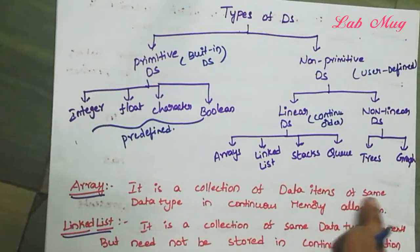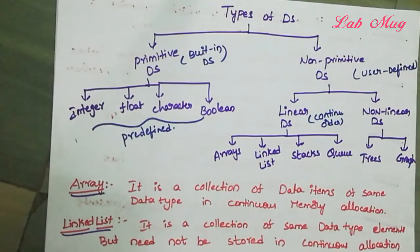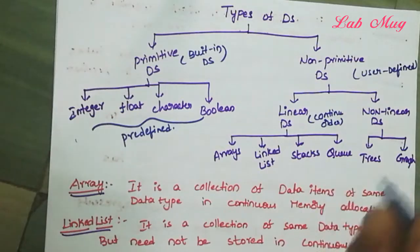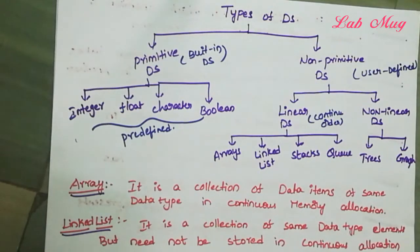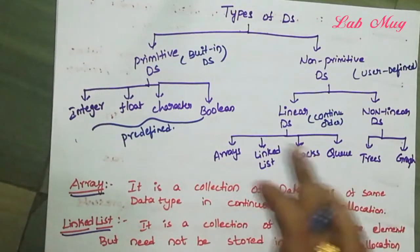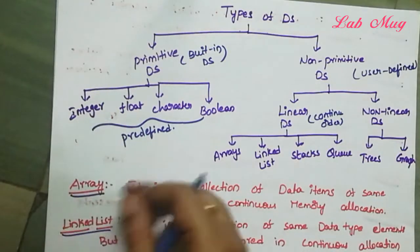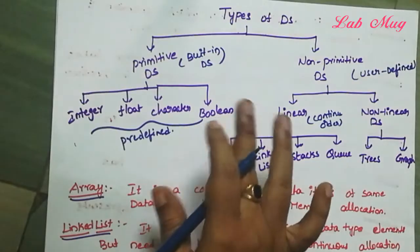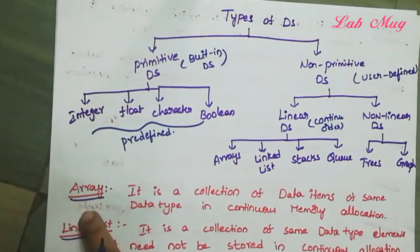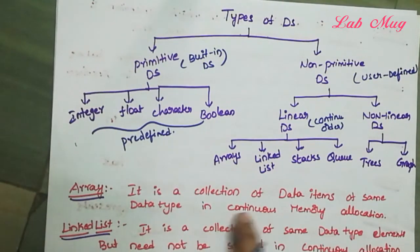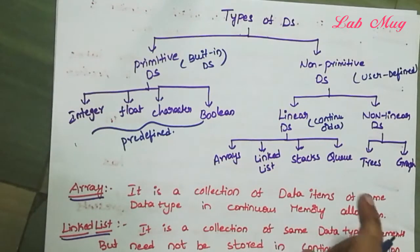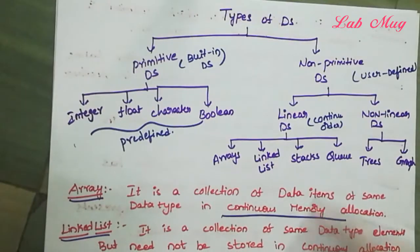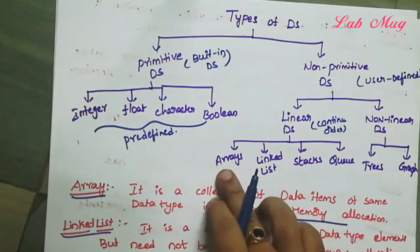An array is a collection of data items of the same data type. For example, an integer array stores 10 or 20 elements based on the user-defined size — a collection of same data type elements. Array memory allocation is continuous memory allocation, which is why it is classified as a linear data structure.